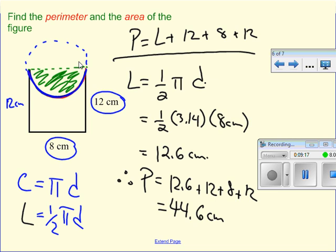So all I had to do was figure out this side, then this side, then this side, and then just add in what the length of this curve will be, which is half of the circumference.